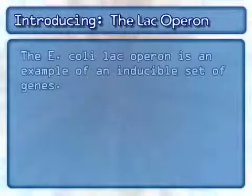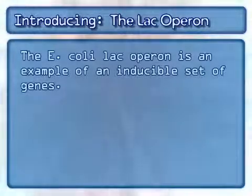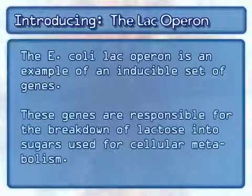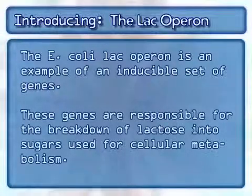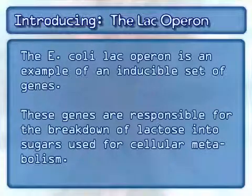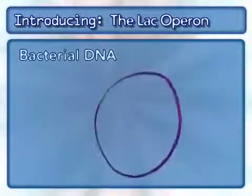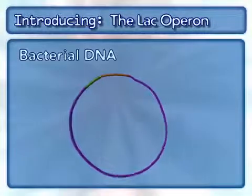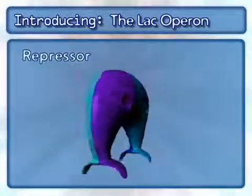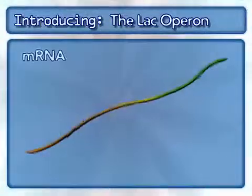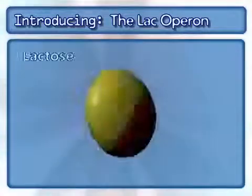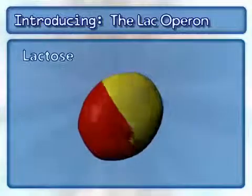The E. coli lac operon is an example of an inducible set of genes. These genes are responsible for the breakdown of lactose into sugars used for cellular metabolism. This inducible system also involves bacterial DNA, a repressor, mRNA, and the sugar molecule lactose.